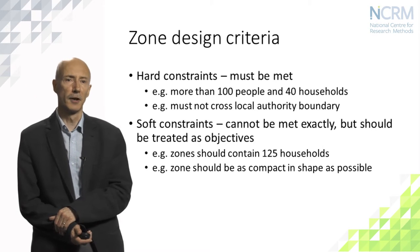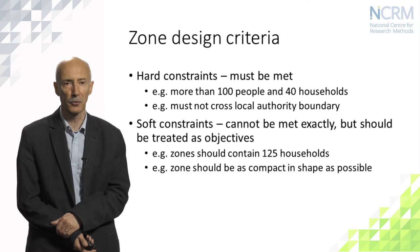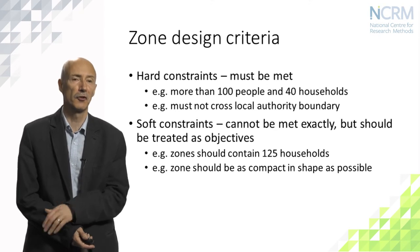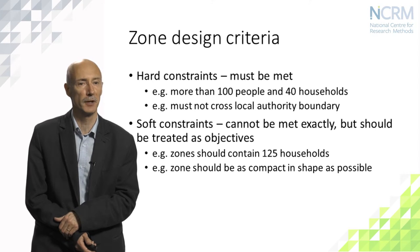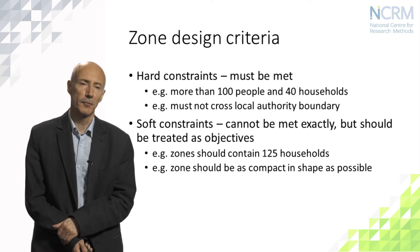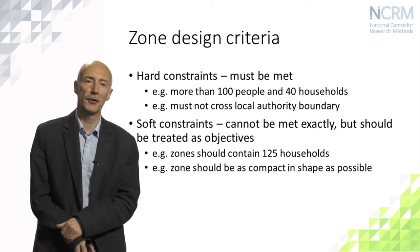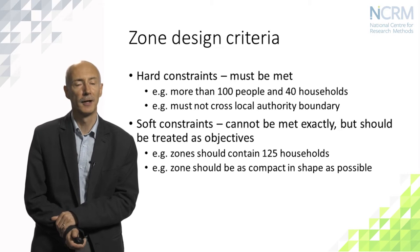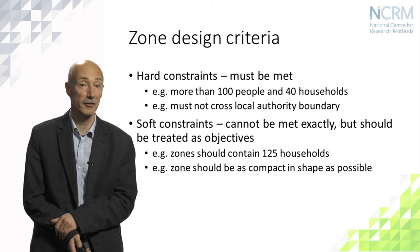Soft constraints are much harder. For example, we might want zones containing as close as possible to 125 households, but that target cannot be met exactly — some buildings may themselves contain more than 125 households, and the area to be zoned may not be a neat multiple of 125. Similarly, a constraint might specify that every zone should be as compact in shape as possible. It is very difficult to find real-world configurations that are highly compact; the most compact shapes resemble hexagons, which is unrealistic in most geographical applications.